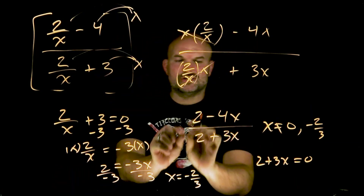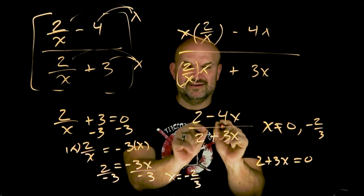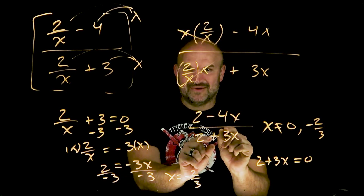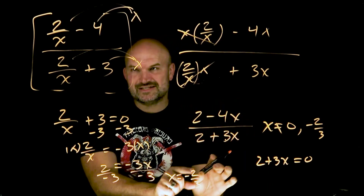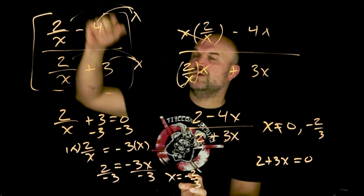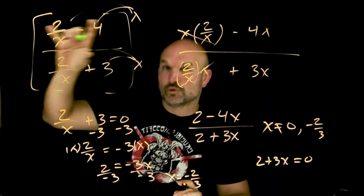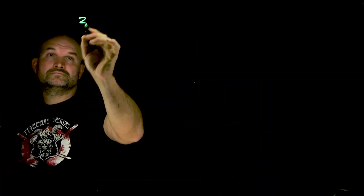Technically, ladies and gentlemen, you can see that's exactly how you're going to get it over here. If you just take 2 plus 3x and set it equal to 0, when you solve — subtract the 2, divide by 3 — you're going to get that exact same excluded solution. But I wanted you to understand that this simplified solution cannot be 0 either. So you have to make sure you include this simplified solution as well as your original solution.